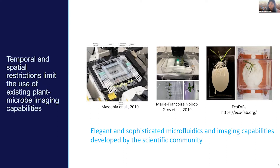However, because of some temporal and spatial restrictions, we are not able to use the existing devices to study a root that's grown out in the field — for example, energy crops like sorghum. Another limitation is the size of these units and the highly controlled environment they sit in. So we want to find ways where we can probe plant-microbe interactions in that near-native environment.